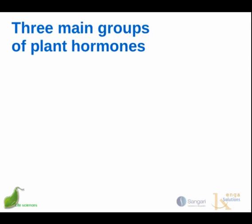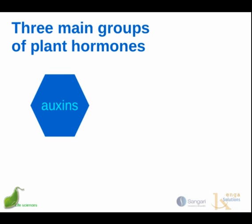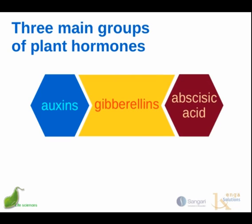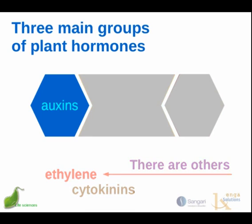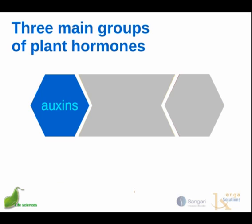There are three main groups of hormones that we will look at in this video: auxins, gibberellins, and abscisic acid. There are others as well, and one that you might hear quite a lot about is ethylene, which plays a role in the ripening of fruit, and cytokinins. We're going to start with auxins.